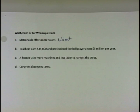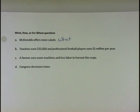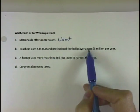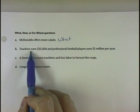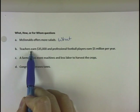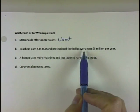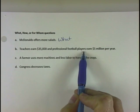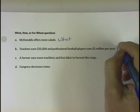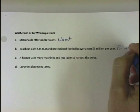Teachers earn $35,000 and professional football players earn $5 million per year. This one has to do with income — the more income we have, the more stuff we can get. Since the football player gets $5 million and the teacher only gets $35,000, the football player can get more of the stuff produced. So this one would be a 'for whom' question.